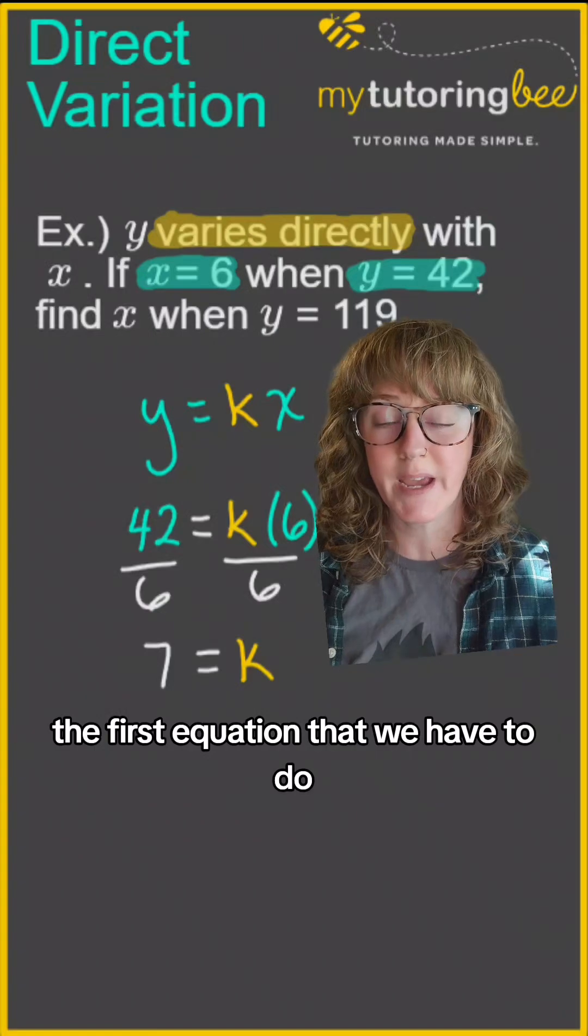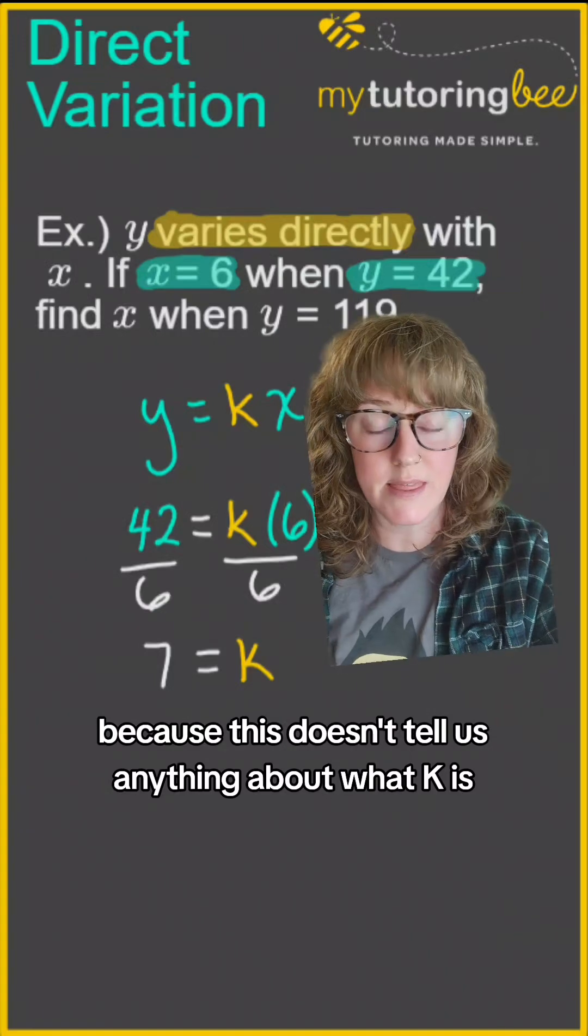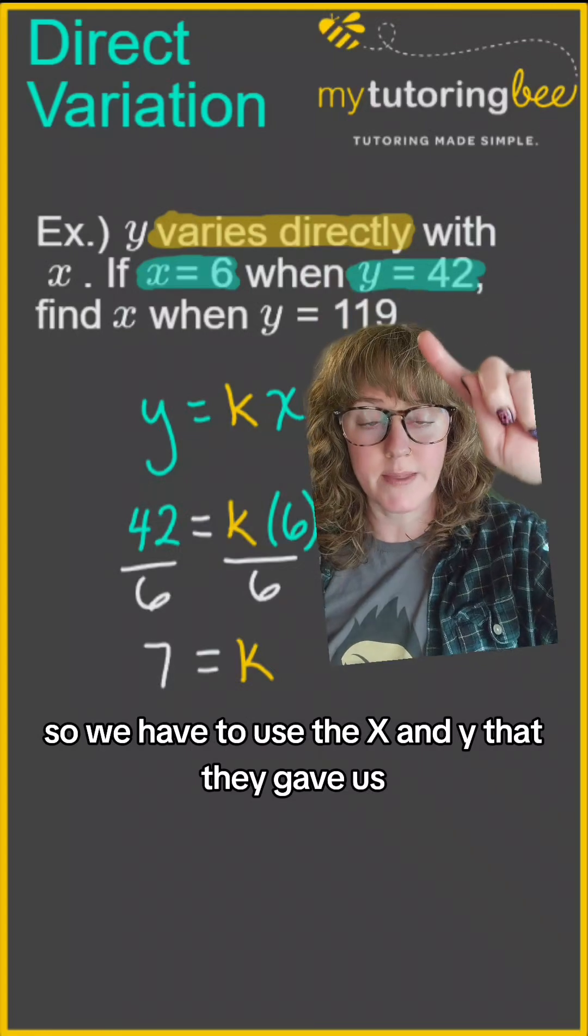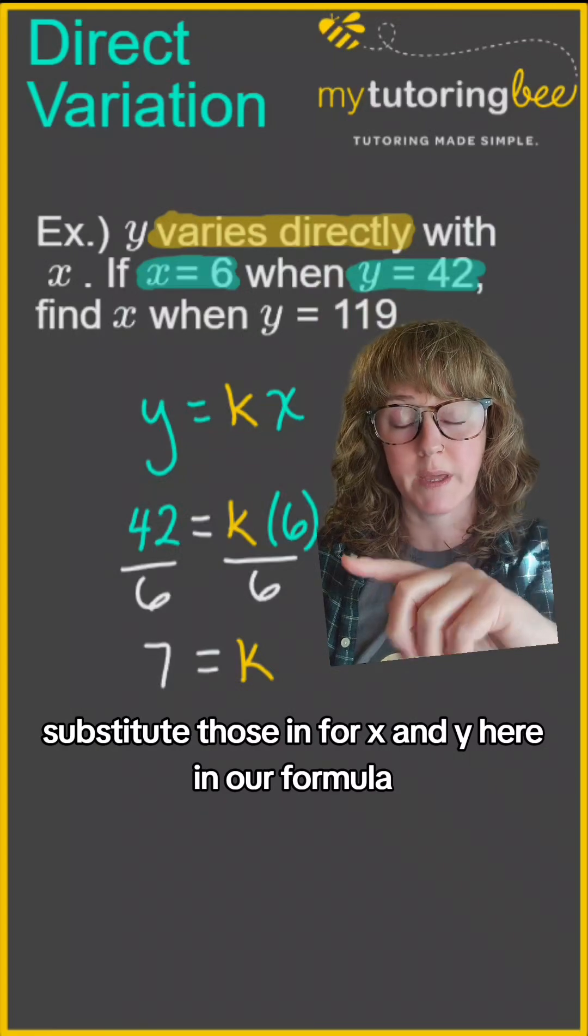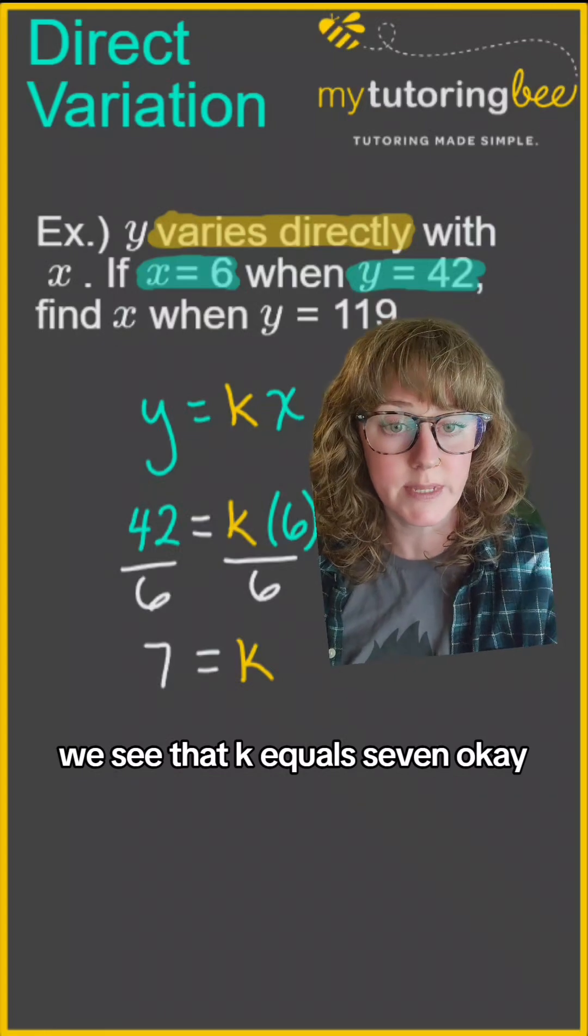The first equation that we have to do, we have to find K. That's our constant, because this doesn't tell us anything about what K is. So we have to use the X and Y that they gave us, substitute those in for X and Y here in our formula, and solve for K. So in this example, we see that K equals 7.